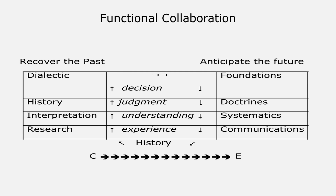Here's the solution. You can see the diagram in front of you, and you'll notice at the top I've changed what most of you would know as functional specialization — I've changed it to functional collaboration. I'm not the only one doing that now. Lonergan called it functional specialization, and I think it's significant to talk about functional collaboration. I'm going to focus on that as we go through.